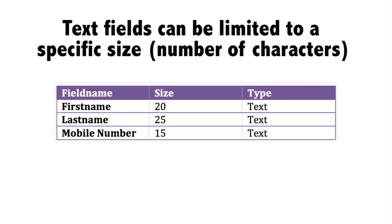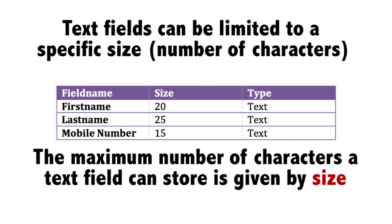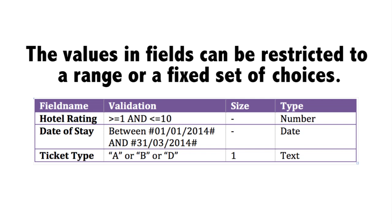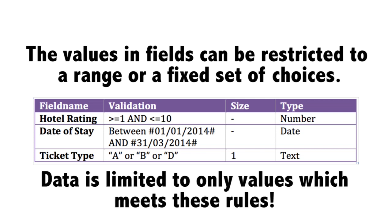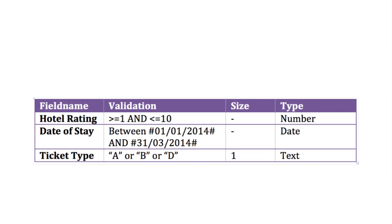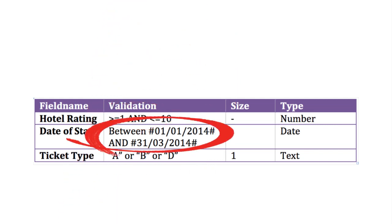Text fields in a database can have a specific length, which is the maximum number of characters that the field can store. Some fields can also have a limit put on the range of numbers, dates, times, or characters they contain, which restricts the data to within that range. For example, numbers from 1 to 10 only, or dates from 1 January to 31 March only.